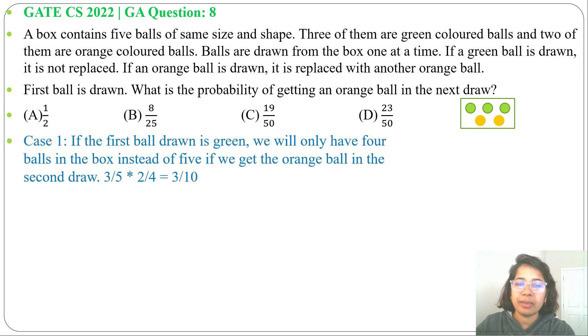So case 1, if first ball drawn is green. Green ball will not be replaced. So there will be 2 green balls and 2 orange balls. Probability of getting green is 3 by 5. From 5 balls, 3 balls are green. From that 3 we are picking 1.